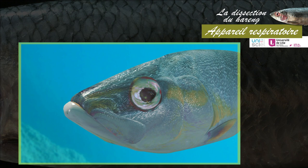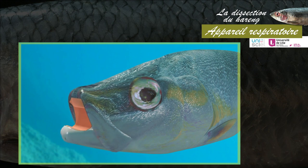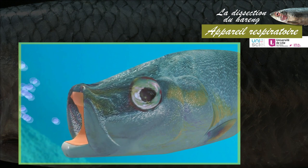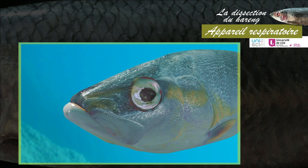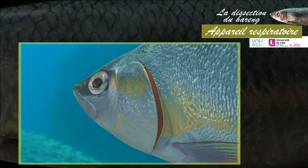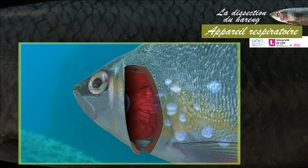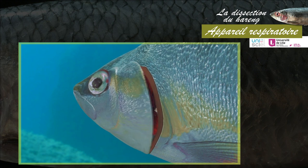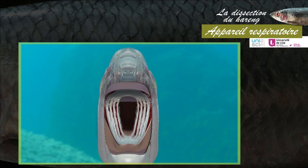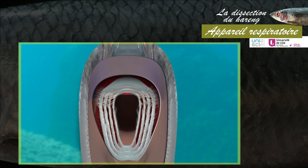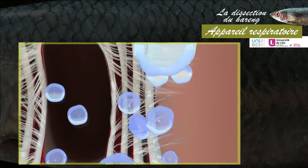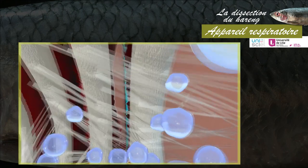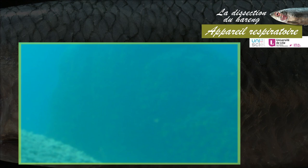Pendant la première phase du cycle respiratoire, l'eau est aspirée par l'ouverture de la bouche et l'abaissement du plancher buccal ; les opercules restent fermés. Dans la deuxième phase du cycle, la bouche se referme, l'eau est poussée vers l'arrière par le relèvement du plancher et sort par les opercules qui s'ouvrent. À chaque cycle, l'eau entre dans la bouche, transite dans le pharynx, passe par les fentes branchiales, s'écoule entre les lamelles des branchies et sort enfin par les ouïes.